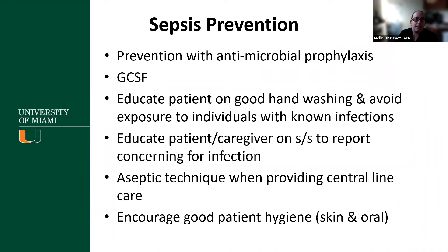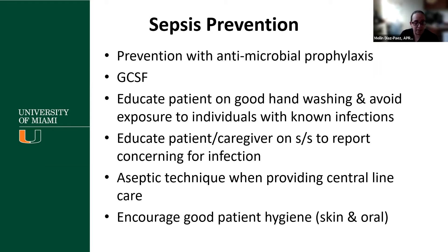How can we prevent sepsis? Many of these patients on treatment will be on antimicrobial prophylaxis, especially during their neutropenic phase or nadir period. You might see them on antiviral medications — acyclovir or valacyclovir. You'll see them on antifungal medications; fluconazole is typically prescribed. For antibacterial coverage when they're neutropenic, they might be on levofloxacin prophylaxis or Bactrim. Growth colony-stimulating factors are used, especially after chemotherapy when counts are low, to shorten that nadir period — another way we help prevent sepsis.